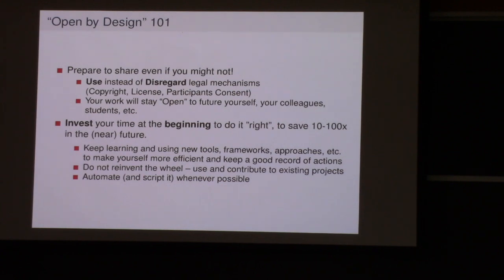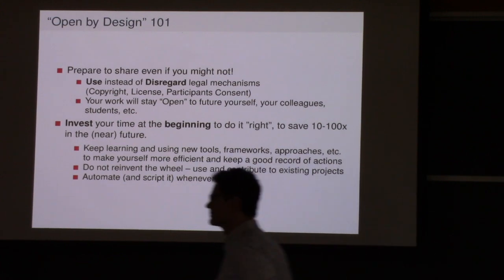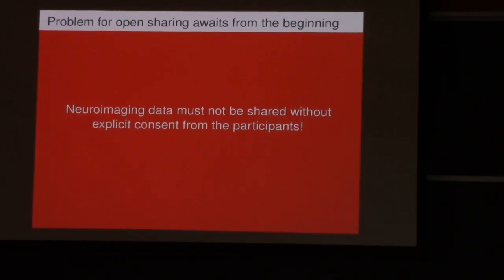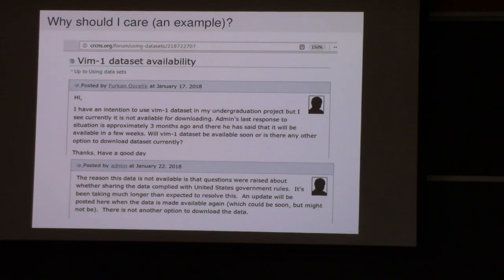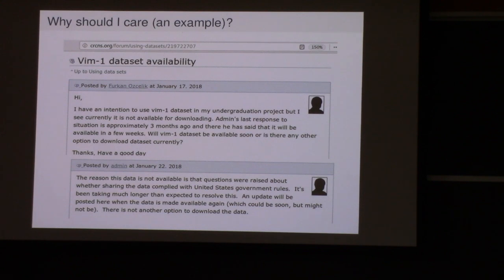Open by design — now we know the principles. What should we start with when thinking ahead for our studies? The first problem: plan for open sharing from the beginning. Your imaging data must not be shared without explicit consent from participants. Before we even start collecting data, we should make sure we can share it later — maybe with ourselves or other researchers. It happens that people from well-respected labs need to take data back offline and go back to the IRB committee, which can take half a year or a year to get clearance for data sharing.